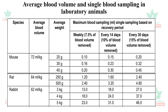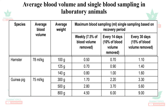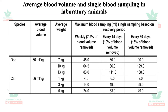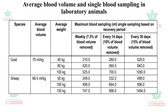For repeated blood collection in kinetic studies, guidelines specify: every one week, 7.5% of the blood volume can be collected; every 14 days, 10% of the blood volume; and over 30 days, 15% of the blood volume. Reference tables are provided for mice, rats, rabbits, hamsters, guinea pigs, monkeys, ferrets, dogs, cats, goats, and sheep. Goats and sheep are particularly used for immunoglobulin studies and vaccine research.